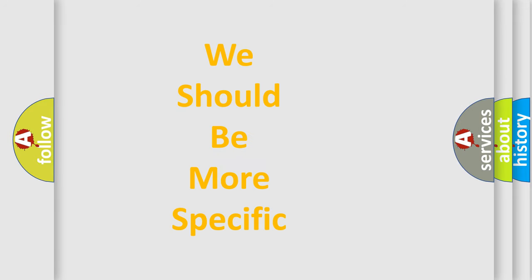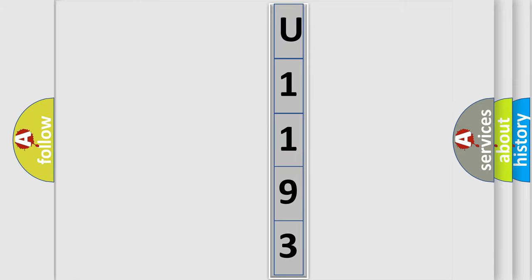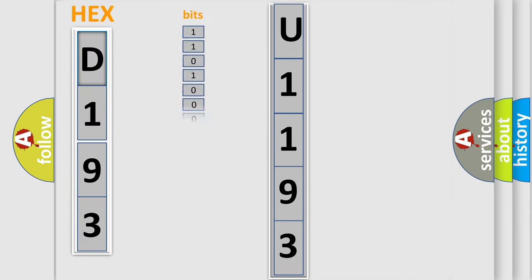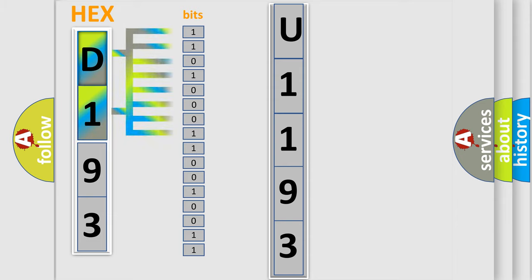The following demonstration will help you look into the world of software for car control units. The error code is split into two bytes consisting of 16 bits. One bit is the basic unit that each computer works with. The bit has two logical states.